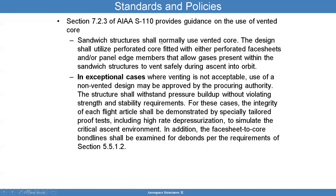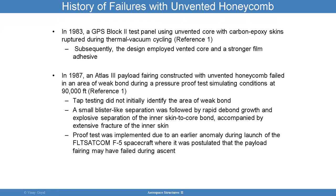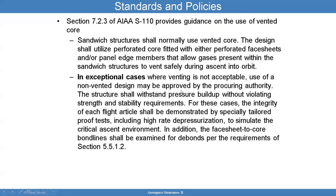But there might be situations where venting is not possible — it may not be possible to vent the core, so there are exceptions to the rule. What they're saying is that the structure shall sustain the pressure buildup without violating strength and stability requirements. They're asking for a specialized proof test to simulate the critical ascent environment — as we saw with the Atlas V fairing, which failed during the proof test, showing the value of proof testing. Face sheet-to-core bond lines and NDE bonds found must be assessed appropriately.